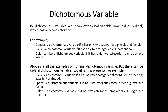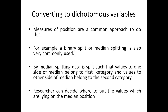Speed is a dichotomous variable if it has two categories with some order — for example, fast and faster. Color is also a dichotomous variable if it has two categories with some order — for example, bright and brighter. It is up to the data analyst how they define their variables. We can categorize as nominal or ordinal depending on what information we are trying to represent and how we are trying to represent it.